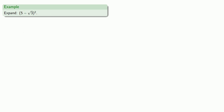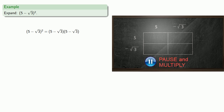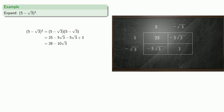Remember, when we say something squared, we really mean whatever it is times itself, so we can do that in exactly the same way. One side is going to be 5 minus the square root of 3, and the other side is going to be 5 minus the square root of 3. Finding our individual products gives us our final answer.